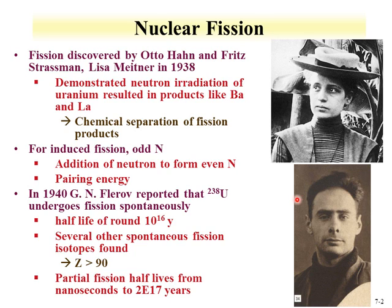Nuclear fission was discovered by Otto Hahn, Fritz Strassmann, and Lisa Meitner. Back in 1938, they demonstrated that neutron irradiation of uranium resulted in lower elements such as barium and lanthanum. They performed chemical separation to show that these fission products were indeed lower elements. They were able to induce fission in uranium due to the odd number of neutrons.